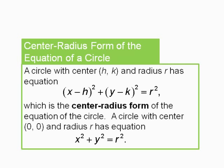A circle with center (h, k) and radius r has the equation: x minus h quantity squared plus y minus k quantity squared equals r squared, which is the center radius form. A circle with center (0, 0) has the equation x squared plus y squared equals r squared.